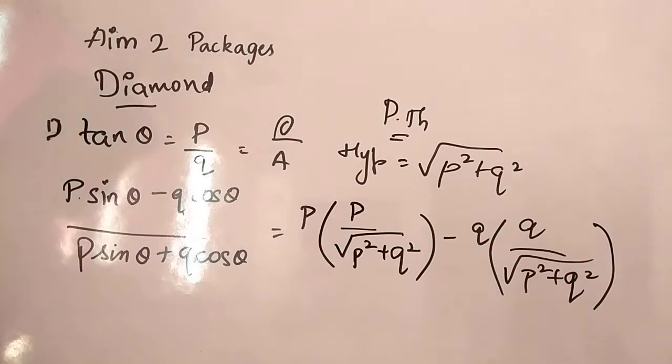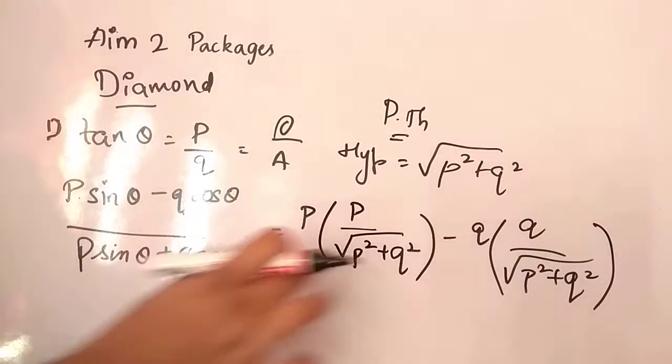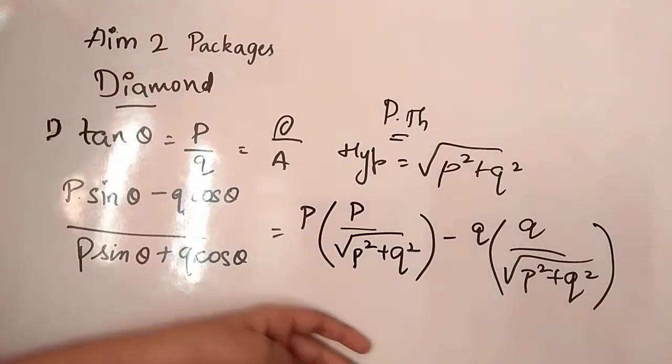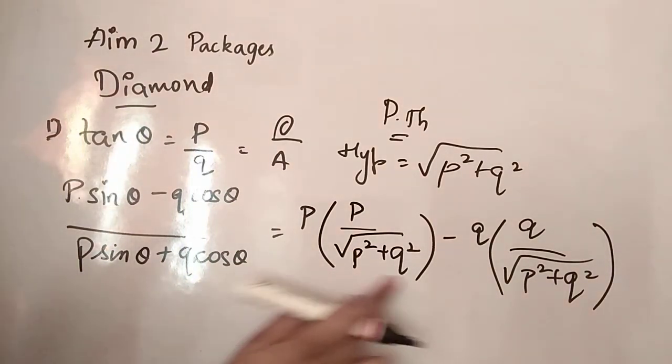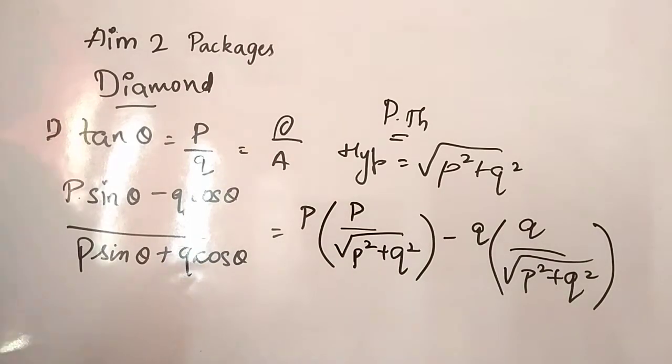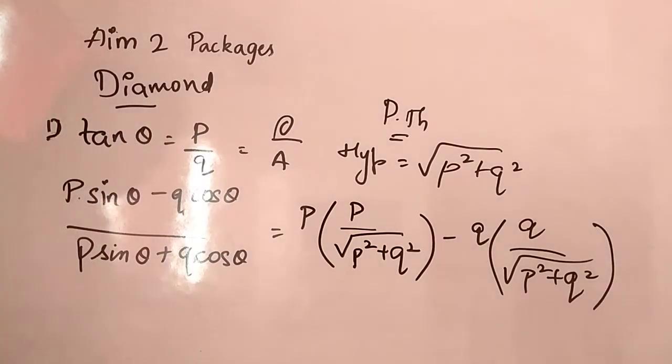Now what we are going to do, we'll be subtracting this, this operation first, finding the LCM. So LCMs are same, right? P square root over, root over P square plus Q square. So now what we will do, we'll take this as common here. Okay?